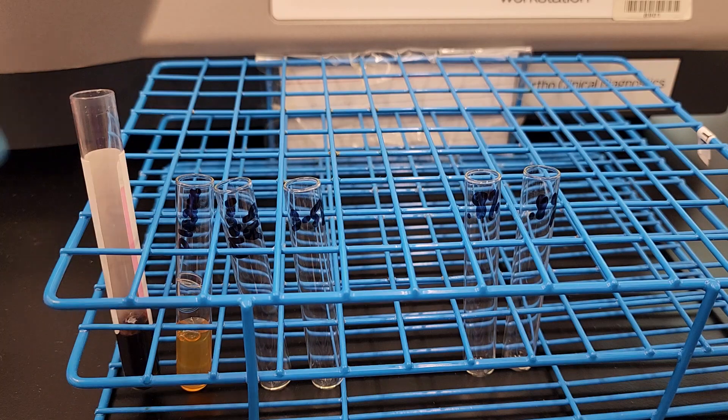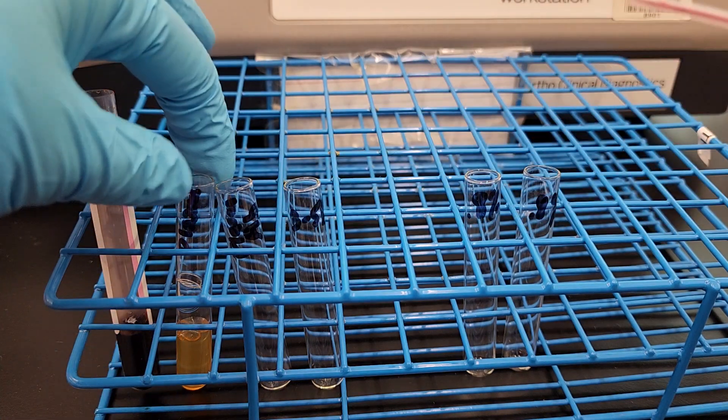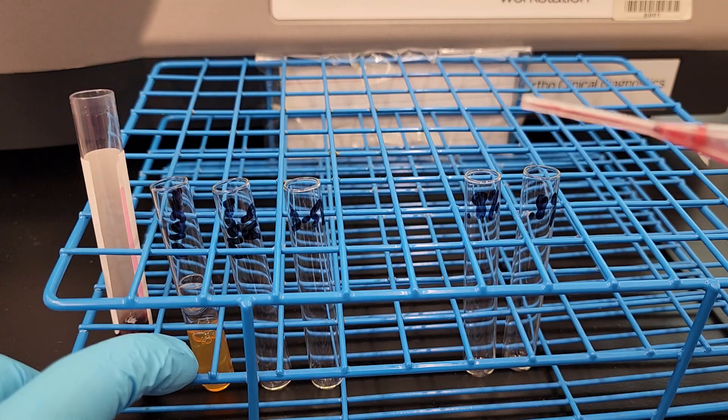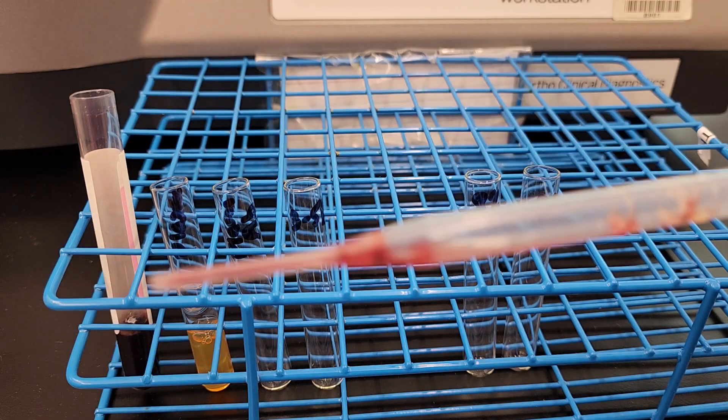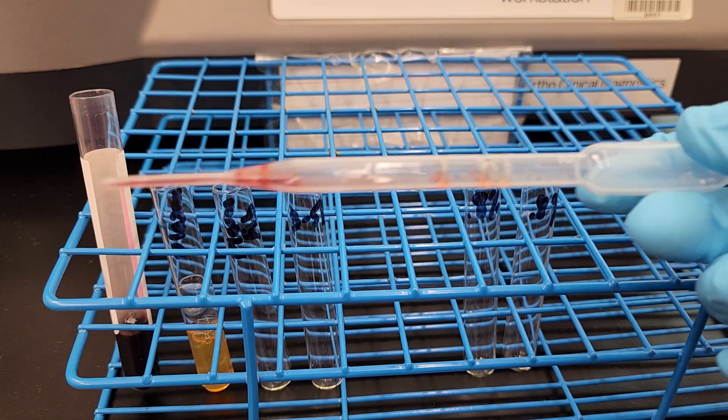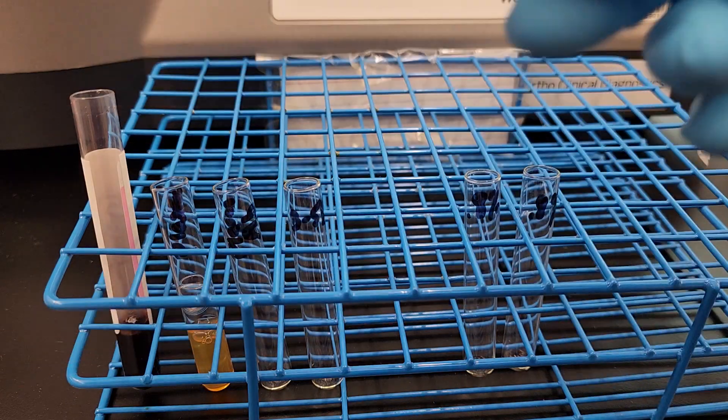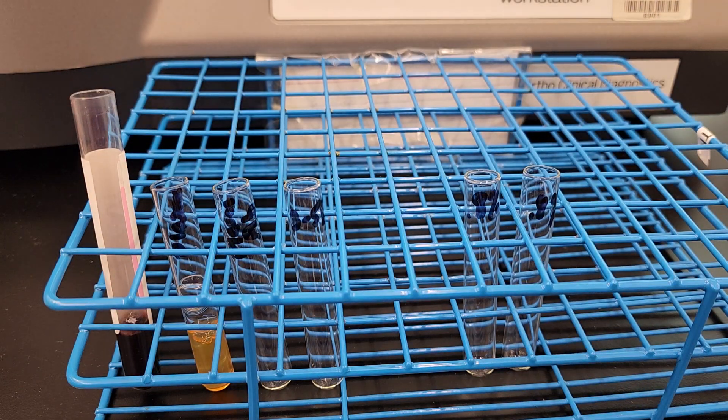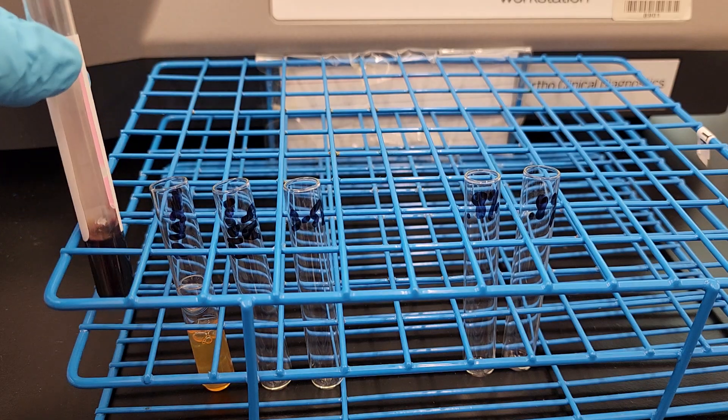So what you could do is if you put these red cells in there, you could spin it down and pull off the plasma that way, put it in a fresh tube. Or you could have not put it in there in the first place and just throw it away like I'm going to do. So that went in the red trash can. All right, so now I have my packed red cells.